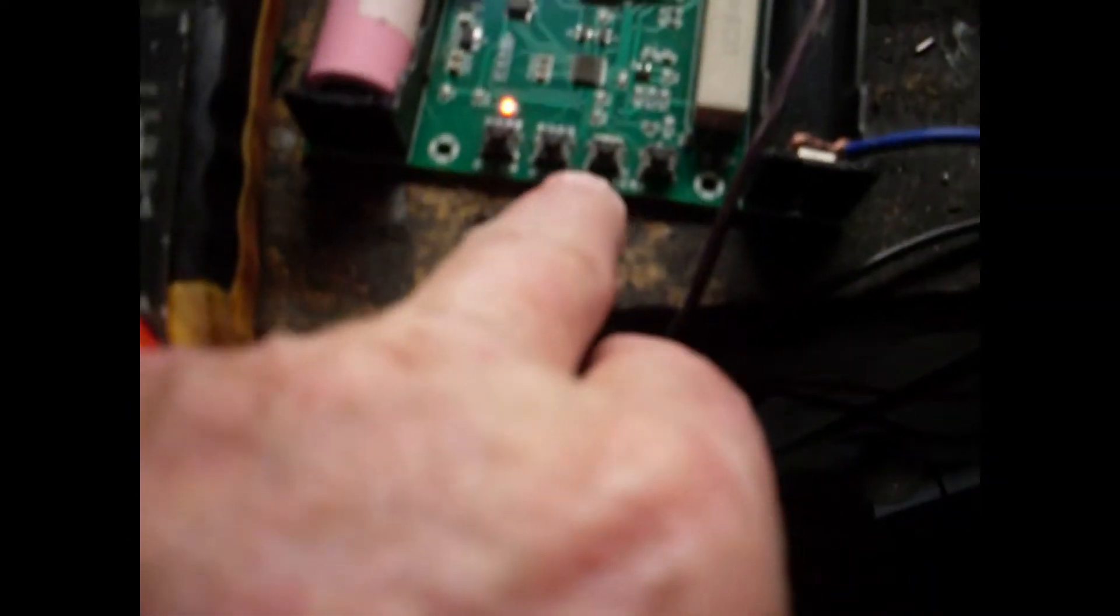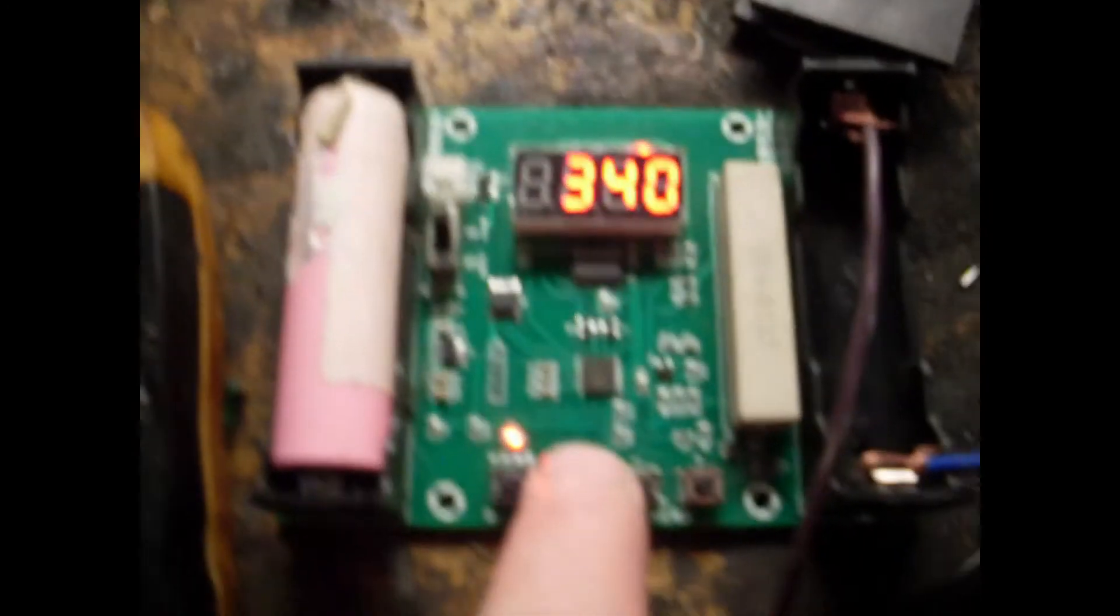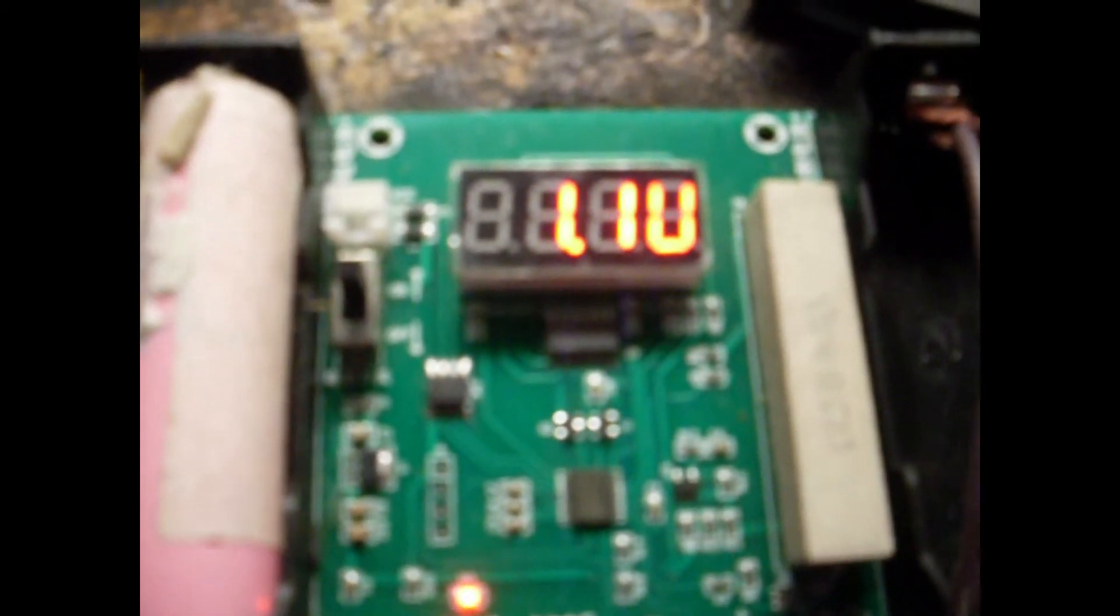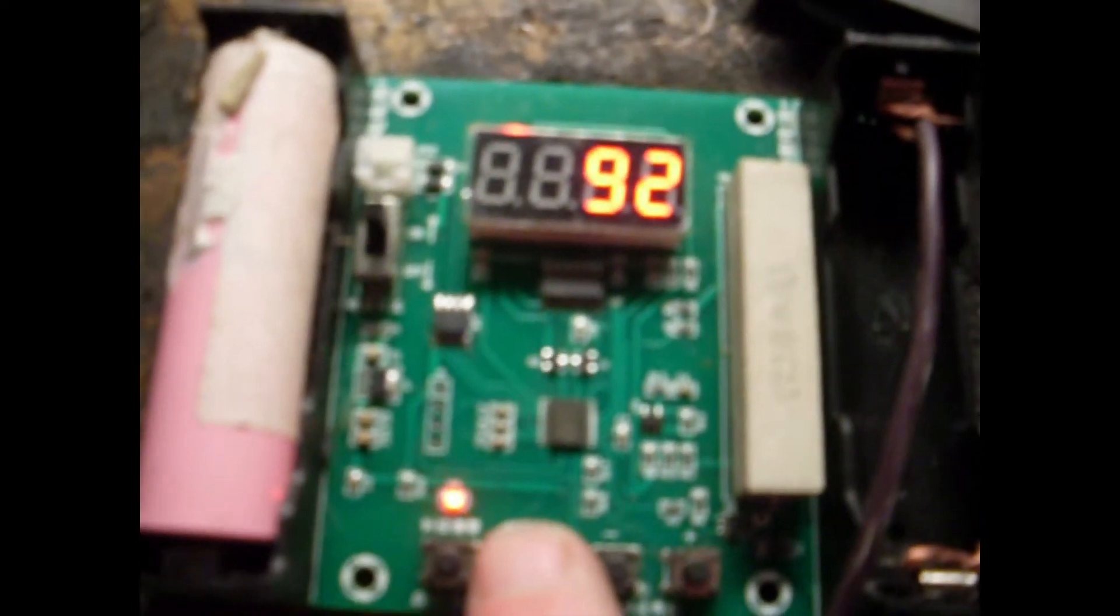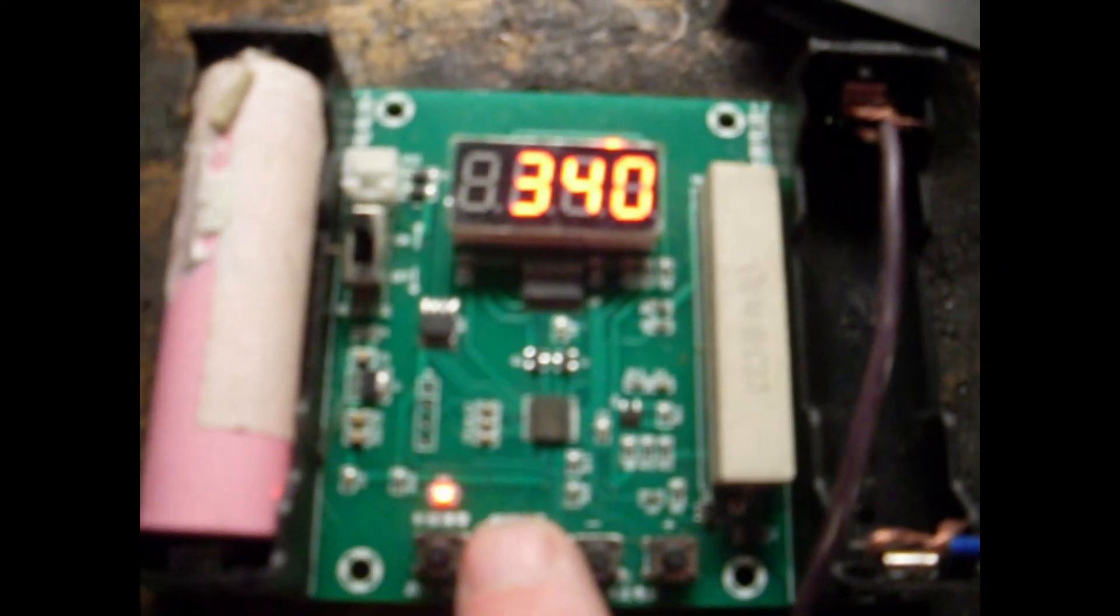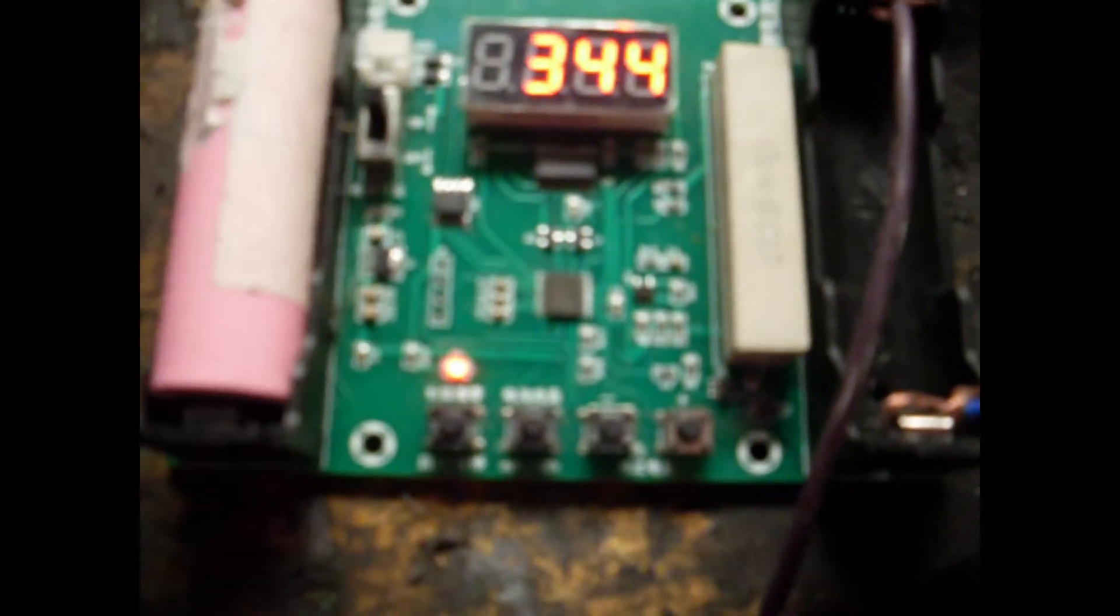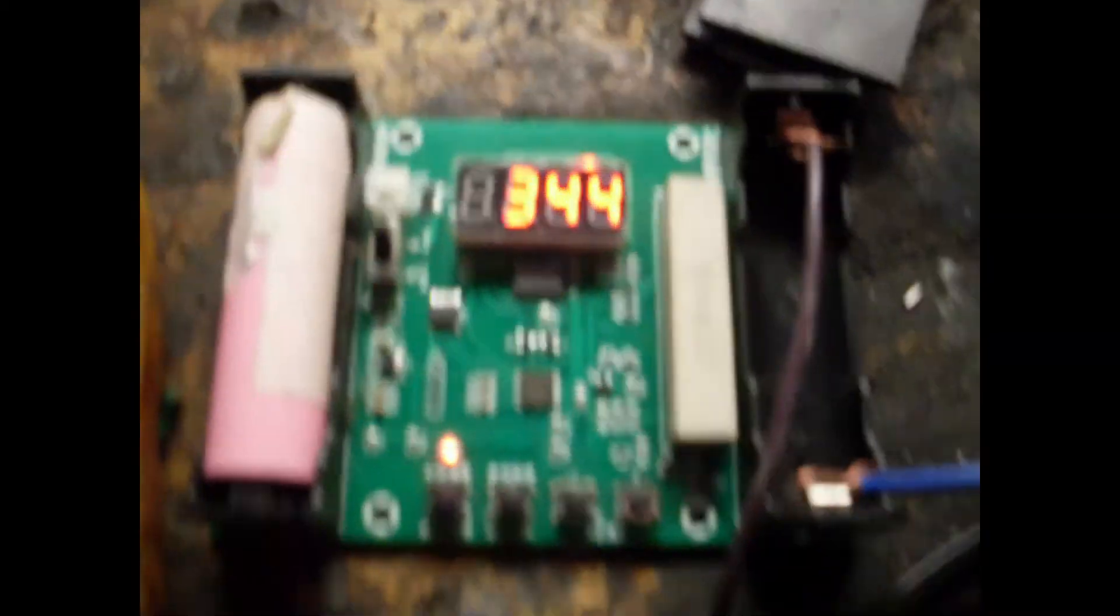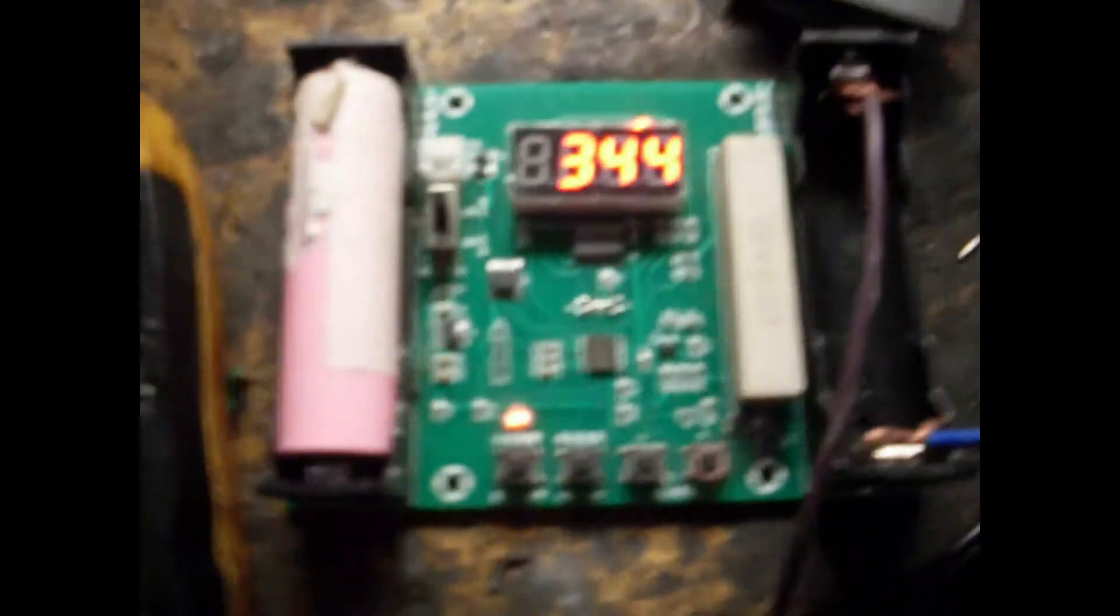It's milliamp hours, and the battery is 1.1 volts. That's 91, 92 milliamp hours. Is that 34 or 340 milliwatt hours? I don't know.